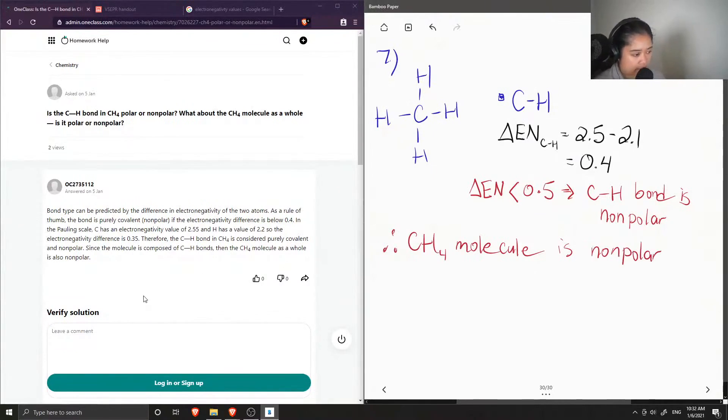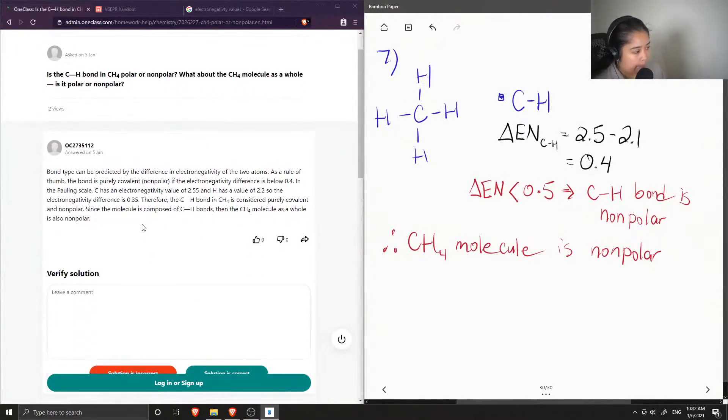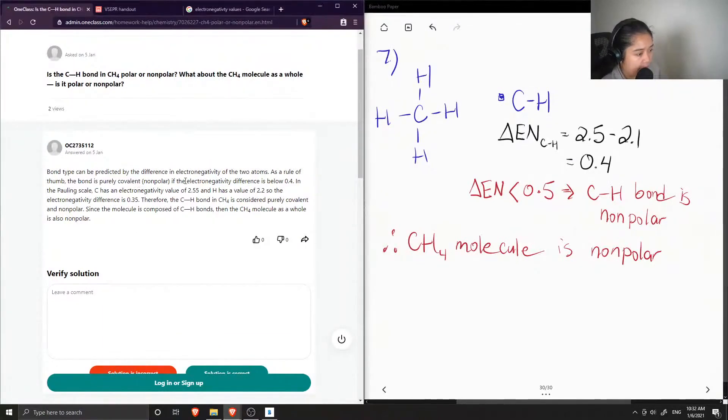Okay, so let's see what the junior tutor said. Bond type can be predicted by the difference in electronegativity of the two atoms. As a rule of thumb, the bond is purely covalent if the electronegativity difference is below 0.4. In the Pauling scale, carbon has an electronegativity value of 2.55, and hydrogen has a value of 2.2.